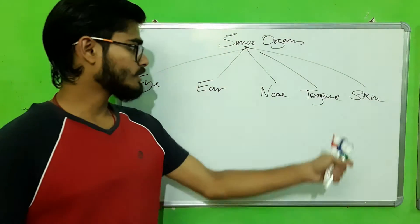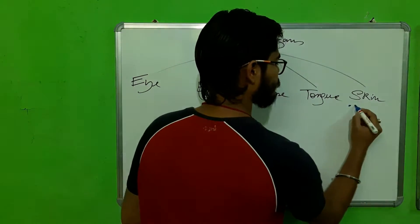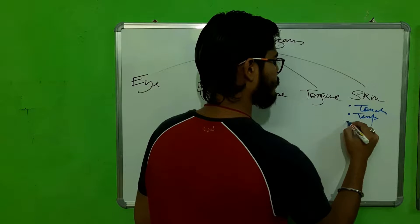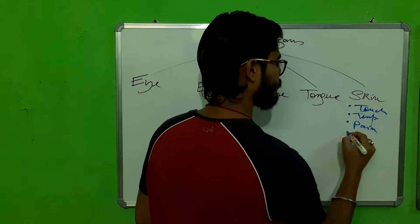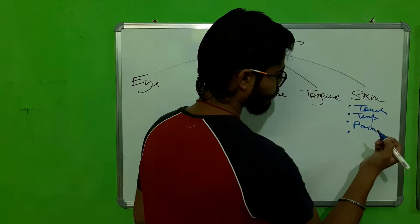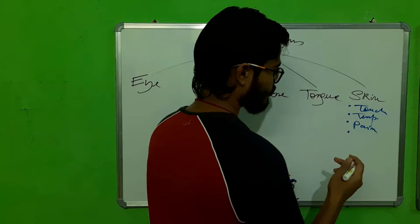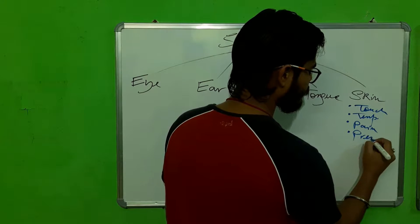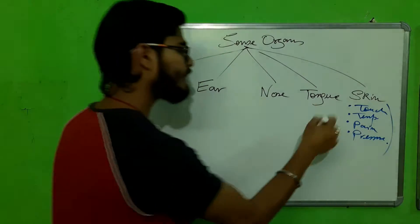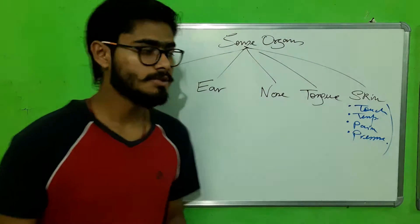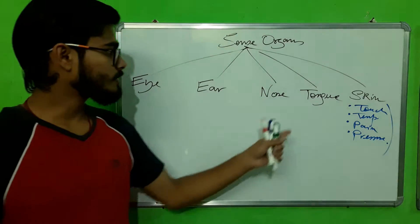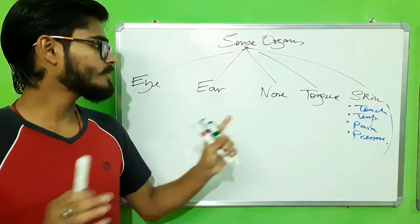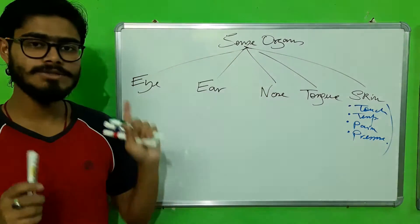The function of the skin is touch, temperature, pain, and pressure. The skin can sense all these sensations. Now what's the function of the tongue? The function of the tongue is to taste the food, and also — not a function of the sense organ — it also helps in talking.